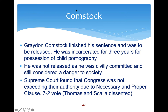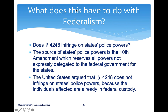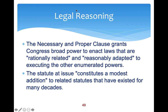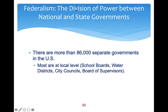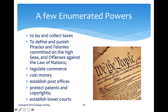Comstock had finished his sentence and was to be released after a three-year conviction for possession of child pornography. He was not released — he was civilly committed and still considered a danger to society. He argued the law violated his constitutional rights. The Supreme Court found that Congress did not exceed its power due to the necessary and proper clause, in a 7-2 vote. Clarence Thomas and Antonin Scalia both dissented. The question was whether Section 4248 infringed on state police powers derived from the 10th Amendment.